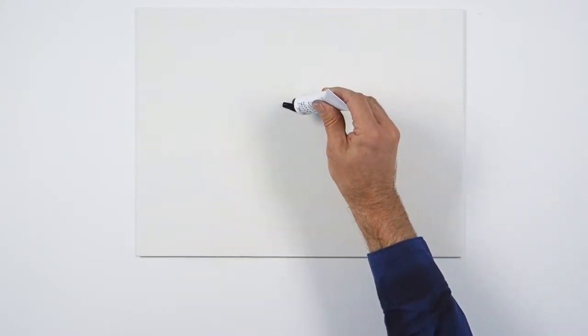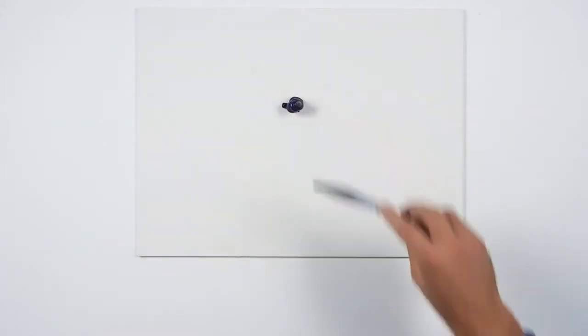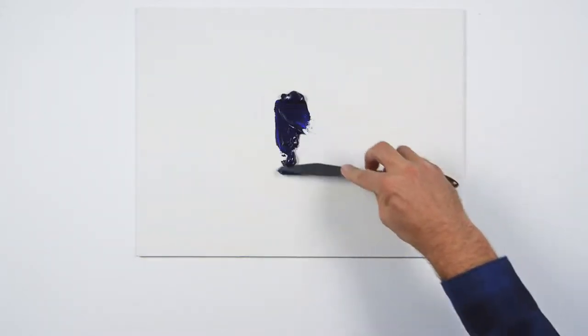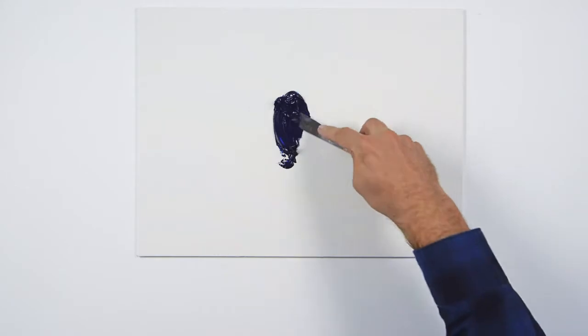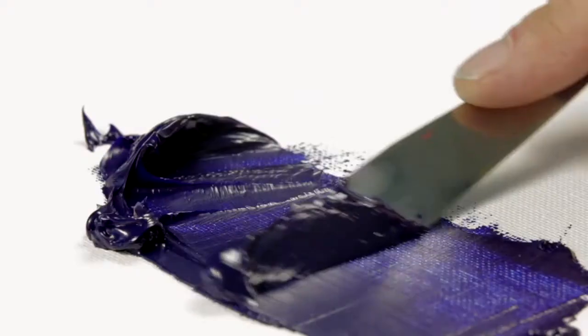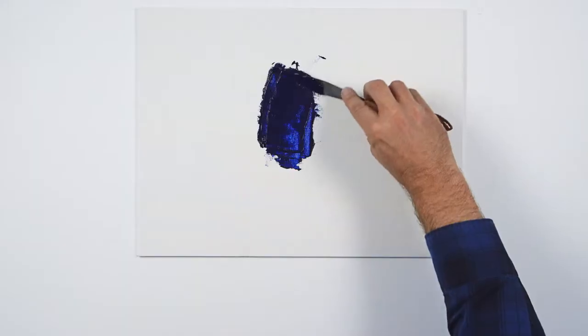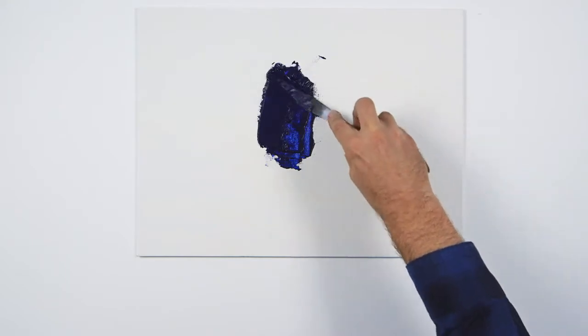Oil paint is comprised of pigment and a binder, a drying oil such as linseed oil. The oil absorption rate varies from pigment to pigment and has a bearing on how fat the color is and in most cases how fast it will dry.